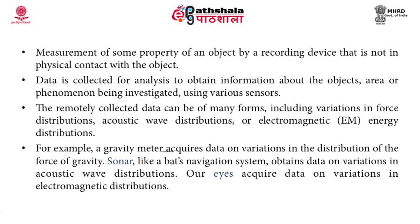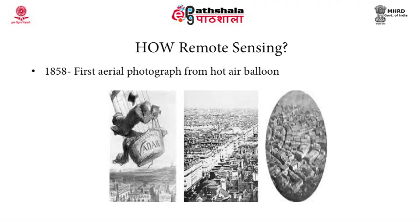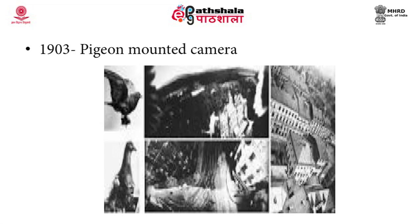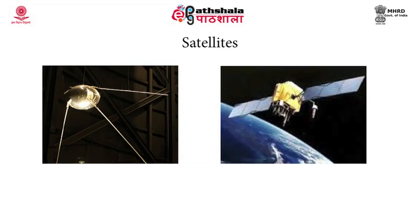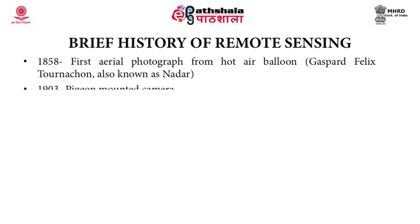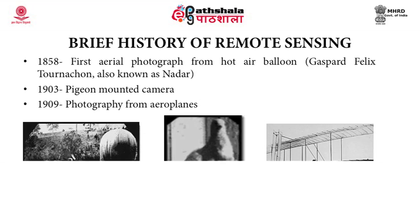The first aerial photograph was carried out from a hot air balloon in 1858 over the city of Boston. In 1903, pigeon-mounted cameras were used to collect remotely sensed data. The latest in this trend are satellites, which have been used since the 1960s and 70s to collect information about various features on the surface of the earth. The first aerial photograph from a hot air balloon was carried out in 1858 by Gaspard Felix Tournachon, also known as Nadar. In 1903, pigeon-mounted cameras were used, and photography from airplanes was carried out in 1909.